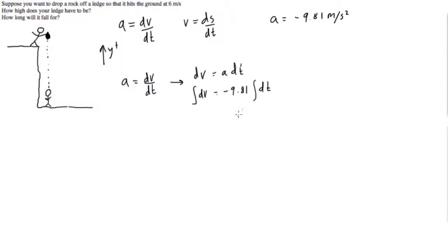Okay cool, so then the integral of dv is just v and the integral of dt is just t, so the velocity is negative 9.81 t and we get our integration constant, but we learned in the last video that in this situation our integration constant is actually v naught.